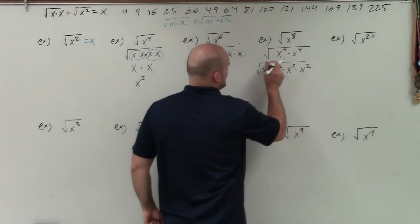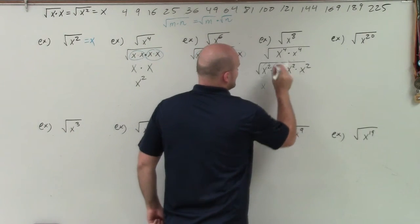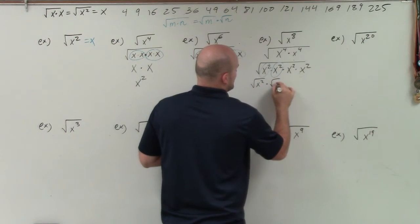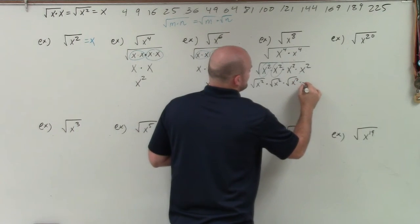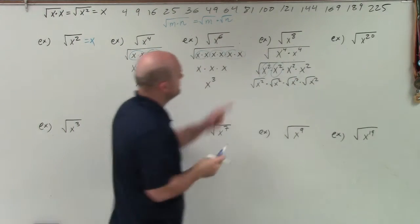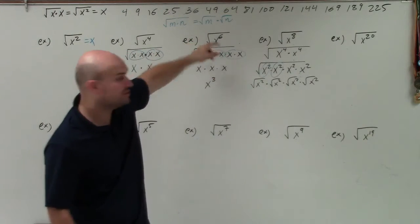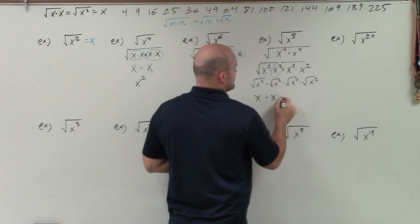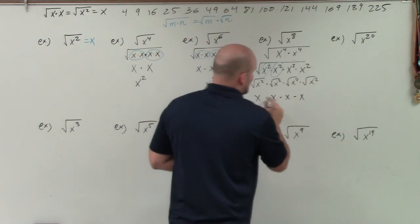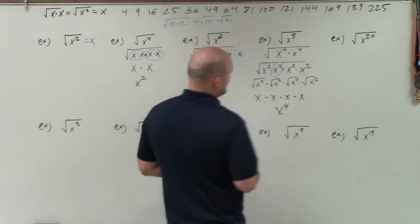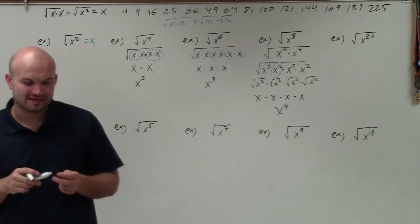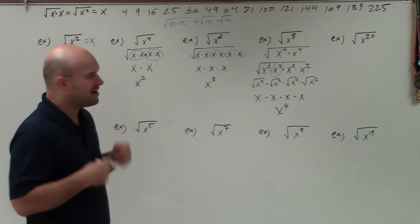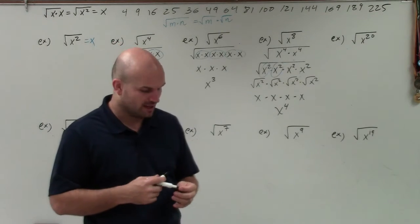We can break x to the eighth down further into x squared times x squared times x squared times x squared. The square root of x squared is x, applied four times using the product rule for radicals. So the square root of x squared times the square root of x squared times the square root of x squared times the square root of x squared gives x times x times x times x, which is x to the fourth. You could also get there more quickly by doing x squared times x squared is x to the fourth.